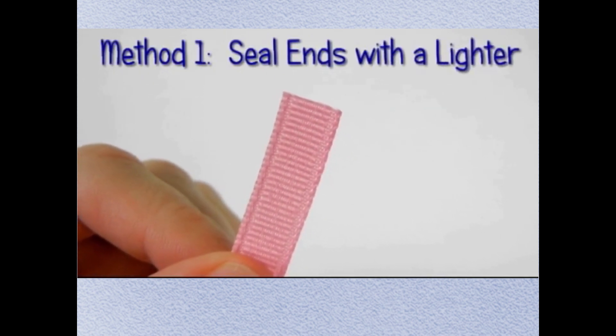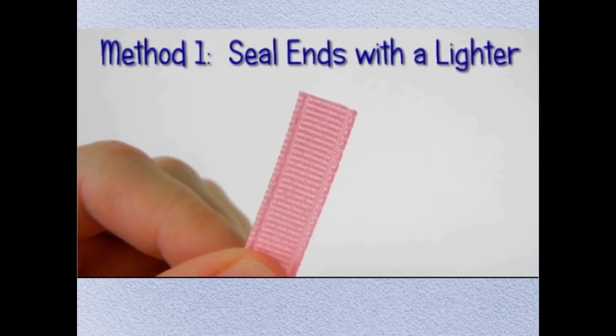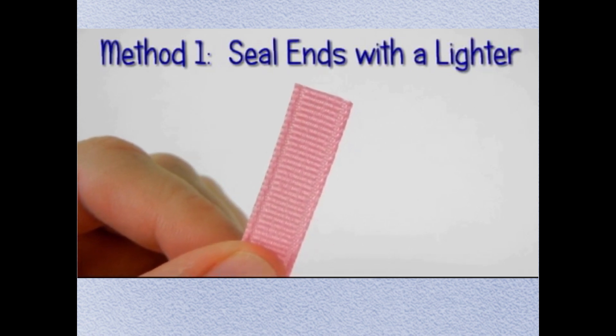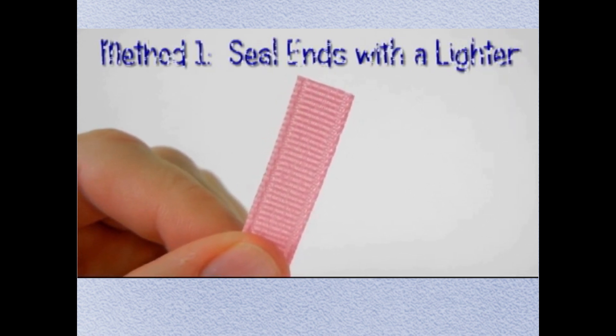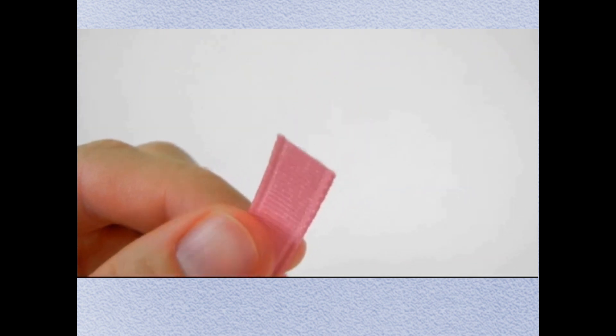The first method I'm going to show you is how to seal your ends with a lighter. The lighter I use is just one I get from a regular store, and I put it on the lowest setting.